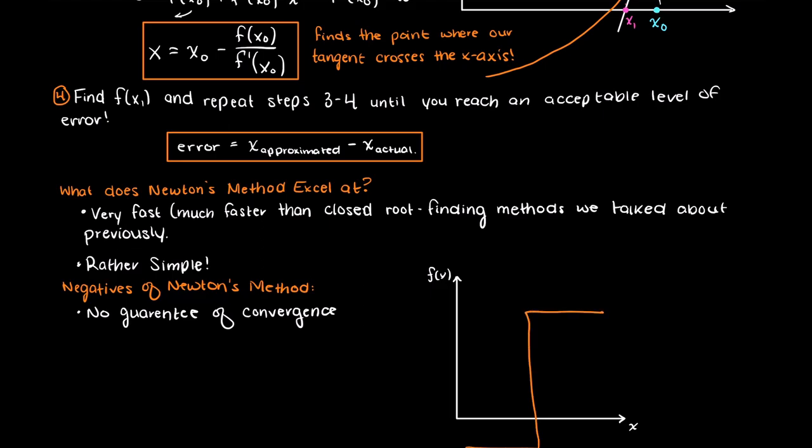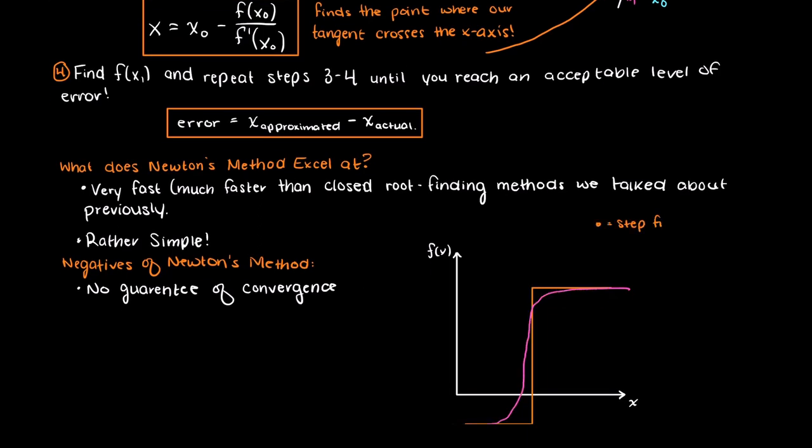To illustrate this, imagine if we had a step function, or even a function similar to a step function. In a proper step function, Newton's method will never work, which should make sense because we cannot draw a tangent line on any of these inputs that will cross the x-axis. Even in a more fluent function here, it is clear that some inputs will send us very far from our true answer.